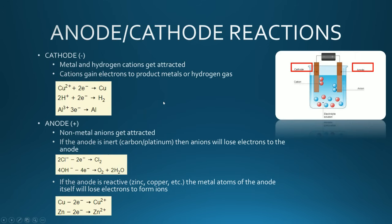Reactions actually happen at these electrodes. At the cathode, it'll usually be metal or hydrogen cations that get attracted, and the cations will basically gain electrons at the cathode to produce metals or hydrogen gas respectively. For example, if you had copper cations in the solution, the copper ions will jump over to the cathode, gain two electrons, and become copper metal. Hydrogen will again gain electrons, discharge itself, and form hydrogen gas. Aluminium gains electrons to form the aluminium metal at the cathode.